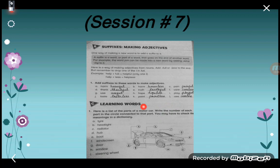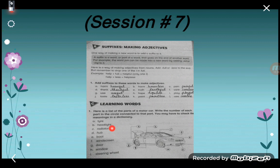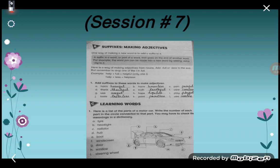Next is a learning-words activity. These words are listed alphabetically, and you have to write the correct alphabet labels in the circles provided: tires, headlight, radiator, hub, boot, windscreen, door, window, and steering wheel.